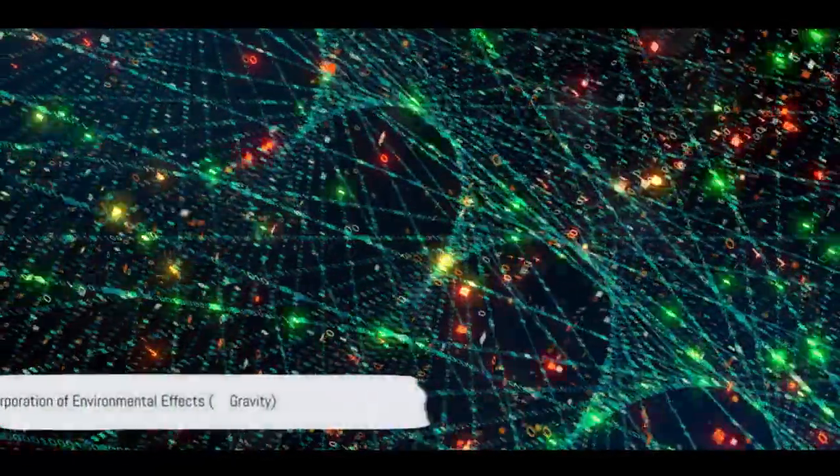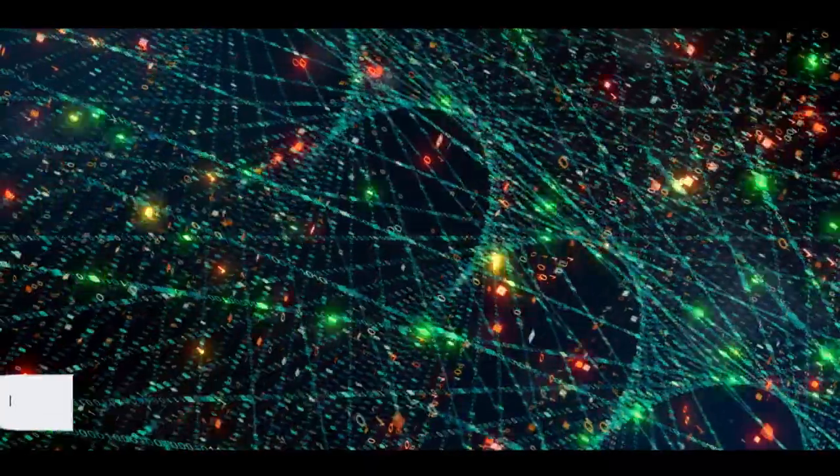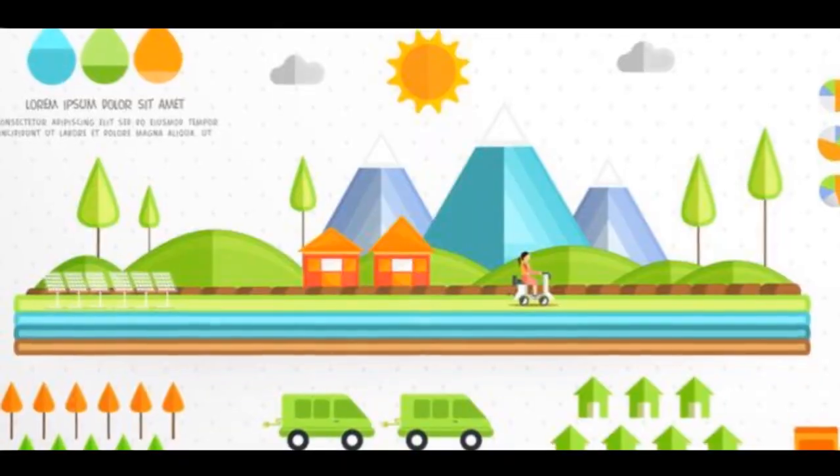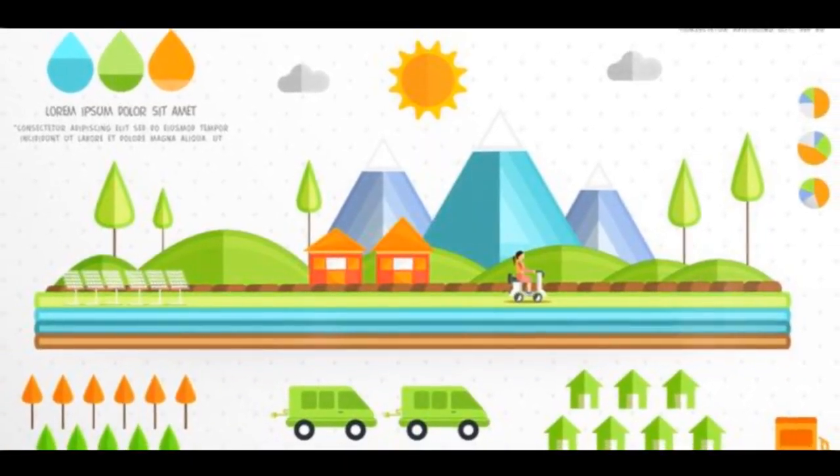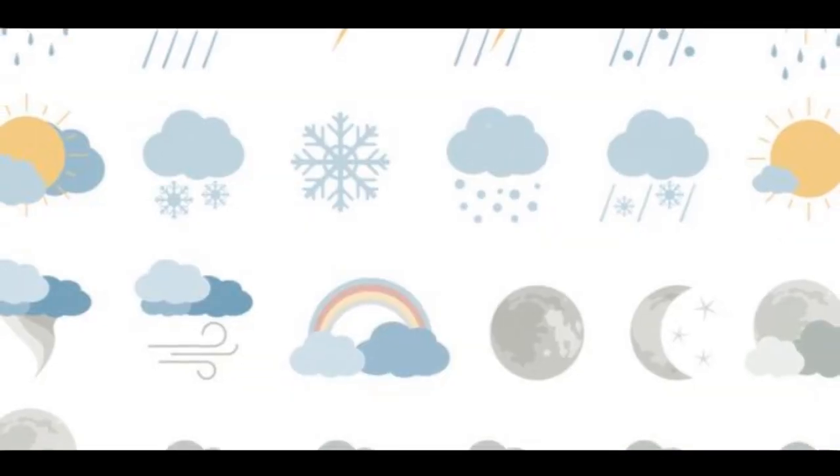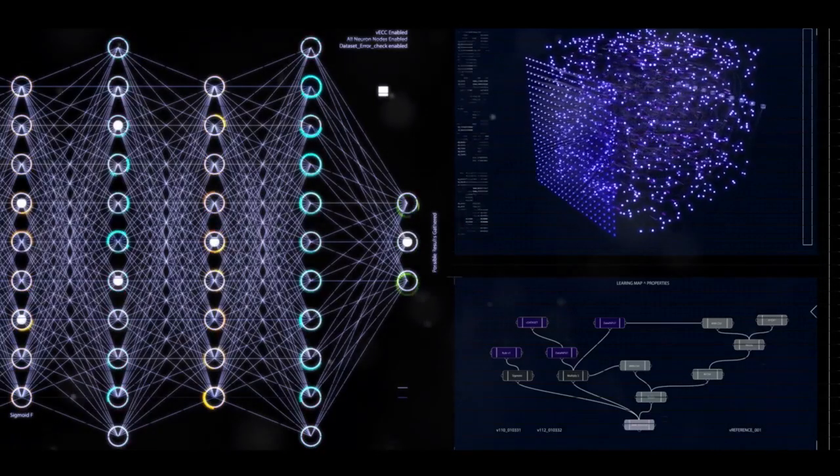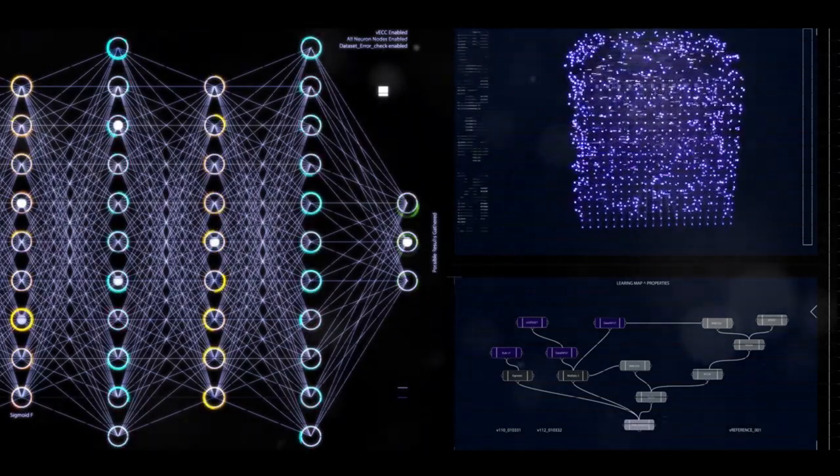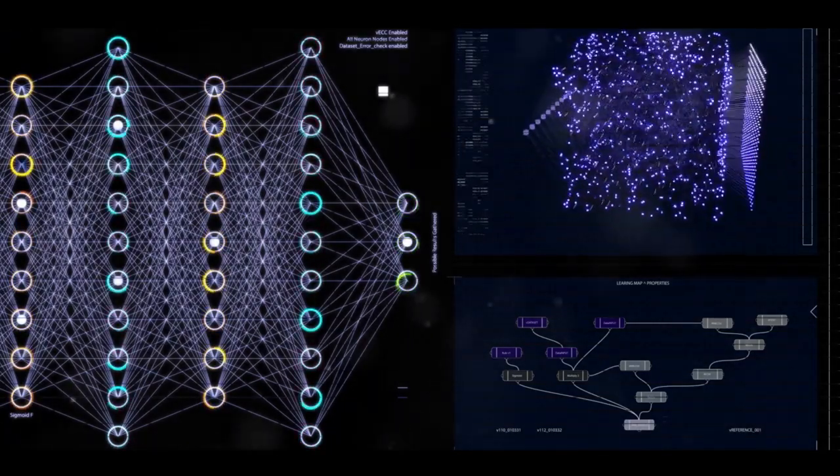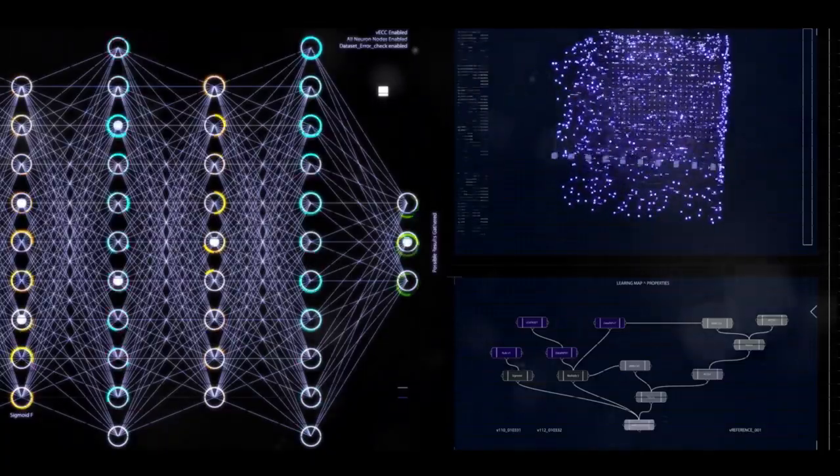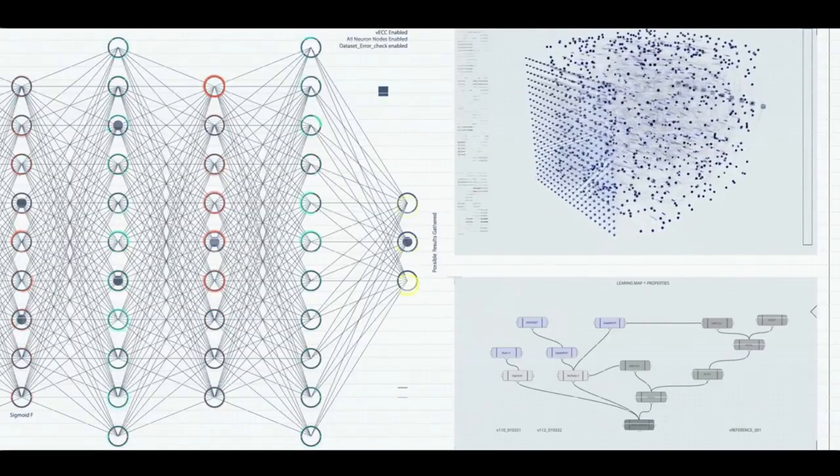The third component is the incorporation of environmental effects, or pussous gravity. This term pertains to the consideration of external factors that influence the behavior of neural networks. These factors could include noise, variations in synaptic strengths, or other elements that impact the accuracy and stability of computations.